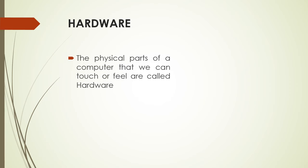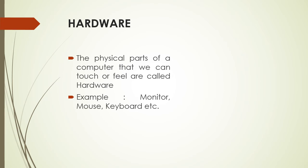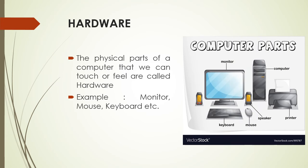Next we will see hardware. What is hardware? The physical parts of a computer that we can touch or feel are called hardware. Examples of hardware are monitor, mouse, keyboard, etc. In the figure you can see the different parts of a computer like monitor, keyboard, speaker, printer, and mouse. These all are called hardware parts of a computer.